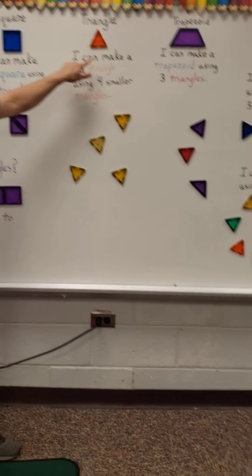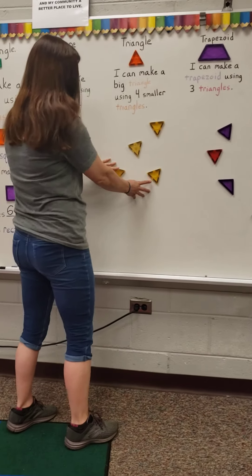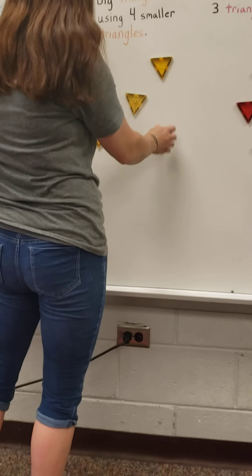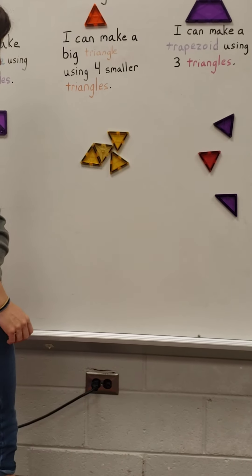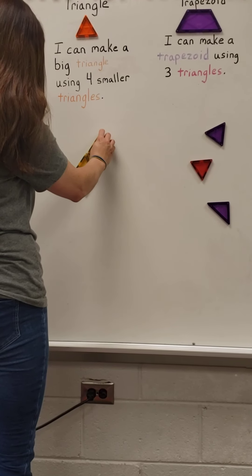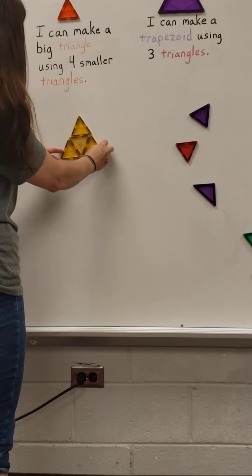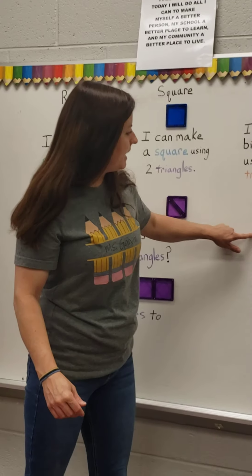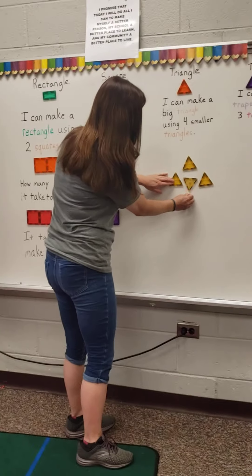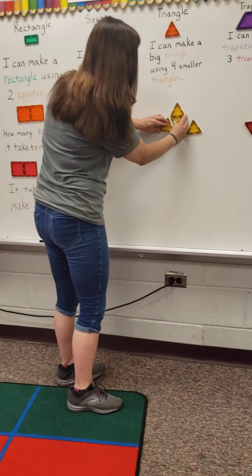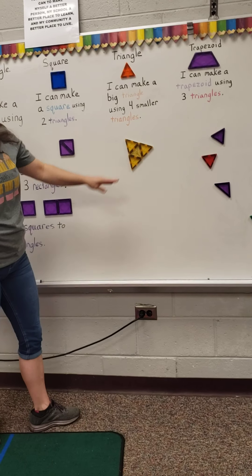Now a triangle. I can make a big triangle using four smaller triangles. So I've got my four smaller triangles right here. There we go — I made a big triangle using one, two, three, four smaller triangles. And even though this triangle is facing down, they're all facing different directions, they're still a triangle. It doesn't matter what direction it faces — it is still a triangle.